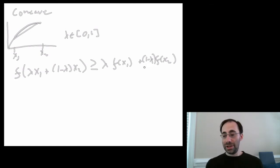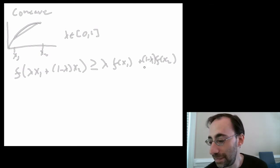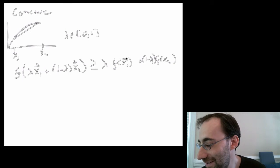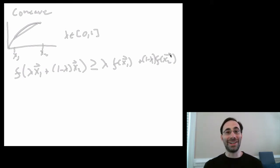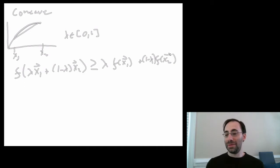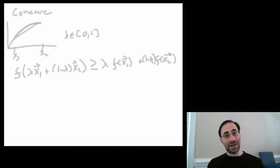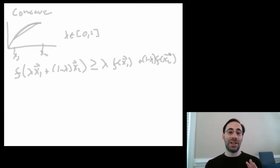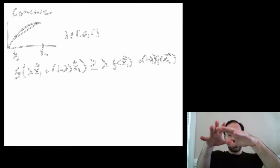What about more than one dimension? The same exact idea, same notation, same everything — you just make the argument into vectors. There's no difference. Now, it's harder to visualize. In two dimensions, it's not so much harder; you can sort of visualize a surface, like the top of a mountain that's always going down.